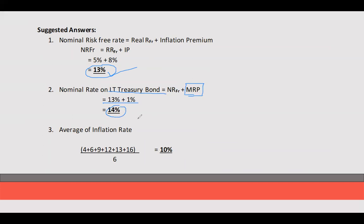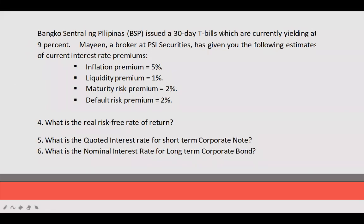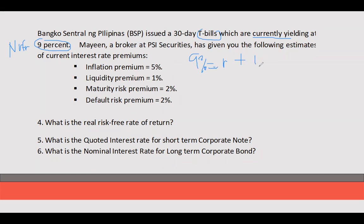So the solution: 5 plus 8 equals 13 for the nominal risk-free rate, and 13 plus 1 equals 14 for the long-term treasury bond. We are not applying IPRT here — the presumption is you compute the interest rate first, which is what you promise before issuing the debt security. When issued, after one year you pay it — that is when you compute the interest expense. The average inflation rate is 10%, computed by adding all expected inflation rates and dividing by 6. For number 4, the Bangko Sentral ng Pilipinas issued a 30-day treasury bill currently yielding at 9%. This treasury bill rate is your nominal risk-free rate, equivalent to the real risk-free rate plus inflation premium. Since inflation premium is 5%, the real risk-free rate is 4%.